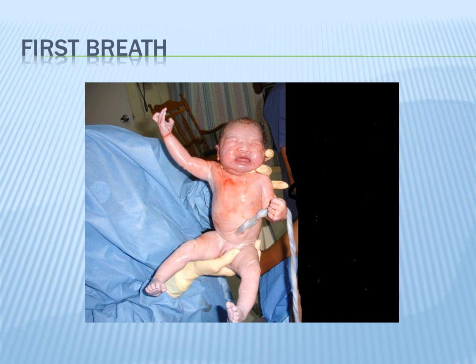The second stimulus is thoracic compression. As the baby passes through the birth canal, its thorax is compressed significantly, helping to squeeze fetal lung fluid out of the lungs. Once the baby exits the birth canal, its chest recoils and expands to normal size, creating a pressure change that allows air to enter the lungs.